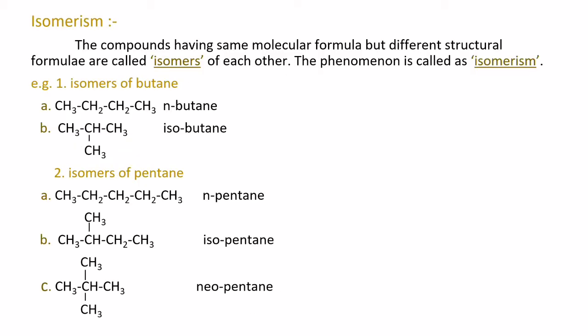Isomerism: The compounds having same molecular formula but different structural formulae are called isomers of each other, and the phenomenon is called isomerism. When a molecule can be arranged in different structures, this phenomenon occurs.